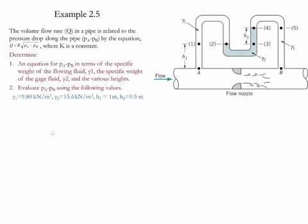Example 2.5. In this example, we evaluate how the volume flow rate is related to the pressure drop in a pipe by the given equation, where k is a constant. Having the information provided, we need to determine the difference between pressure at point A and the pressure at point B. We need to find out the information based on the elevations and the values of gamma provided for all the different fluids.